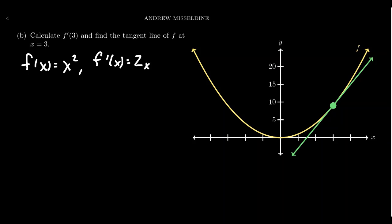Let's calculate f prime of three and find out what the tangent line of f at x equals three would be. Well, now that we've already computed the derivative, computing f prime of three is going to be a cinch. Because we just have to take f prime of three, which by the formula is 2 times 3, which is equal to 6.